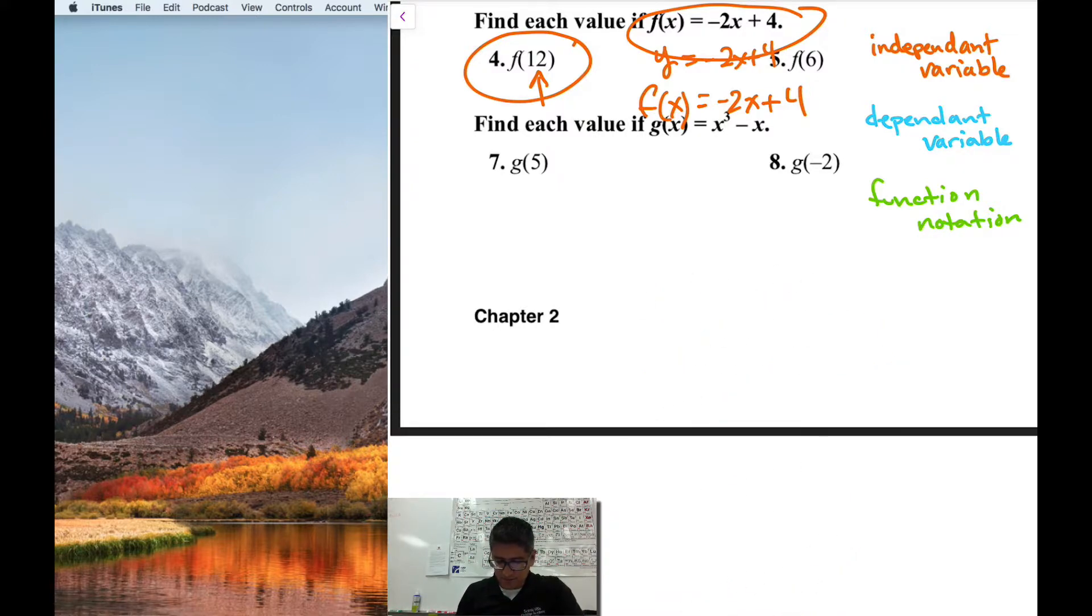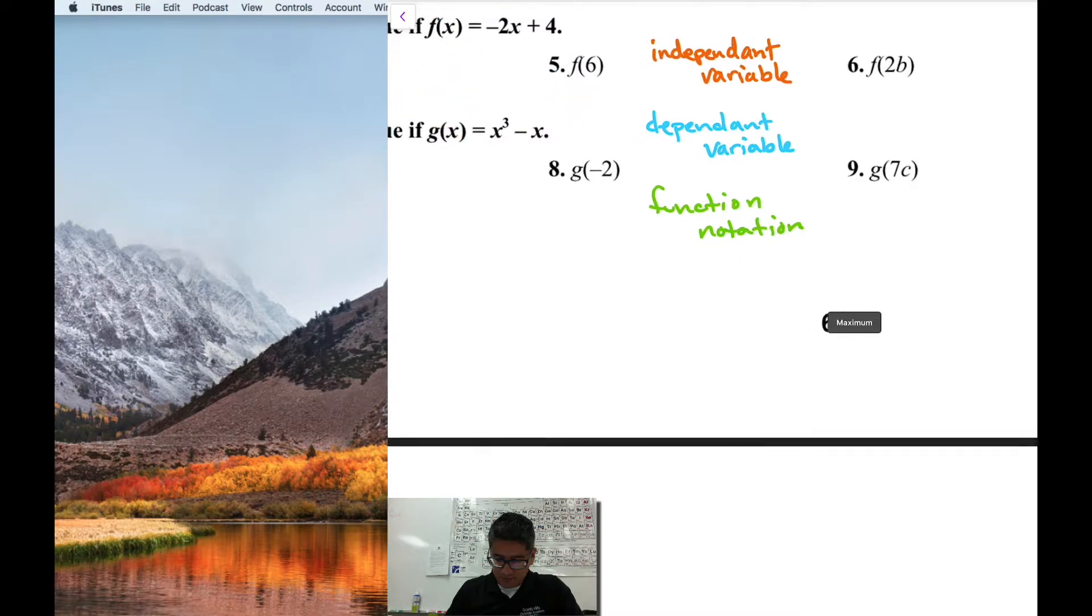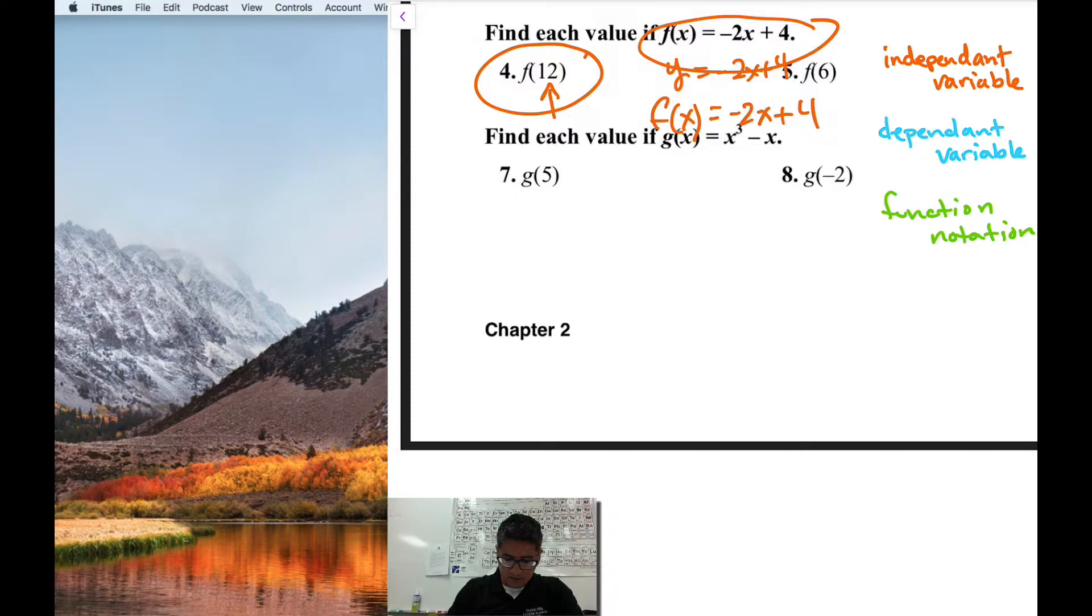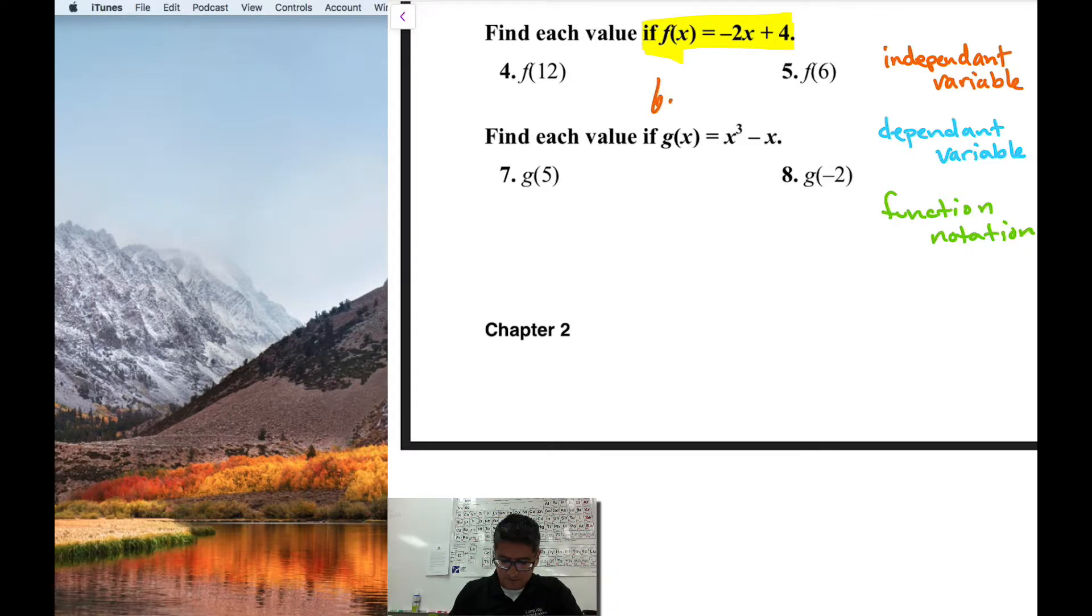Let's work out another one. Let's work out number six, which is 2b. So I'm still working with the same equation, this one right here. But now number six is saying it needs to be replaced with 2b. So this is now a function of 2b. f of 2b equals negative 2x plus 4. So wherever there is an x, I now need to replace it with 2b.